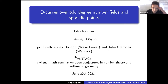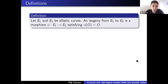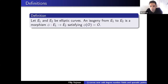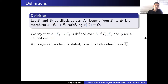Everything I will be talking about is contained in two papers: the first written with John Cremona and the second with Abby Bourdon. Before saying more, let me give a few definitions. Let E1 and E2 be elliptic curves. An isogeny from E1 to E2 is a morphism sending the base point of one elliptic curve to the base point of the other. We say they are both defined over K if both curves and the isogeny map are defined over K. If no field is stated, an isogeny always means over Q-bar.